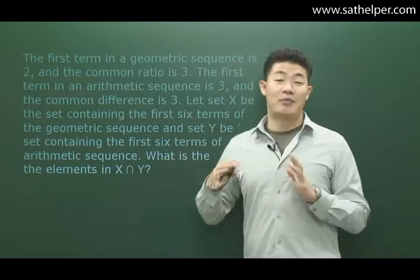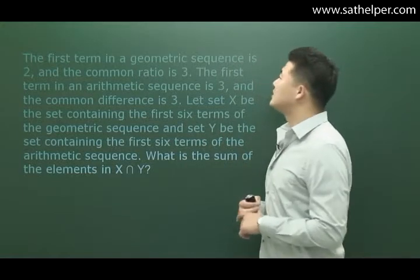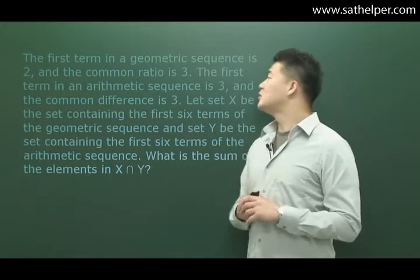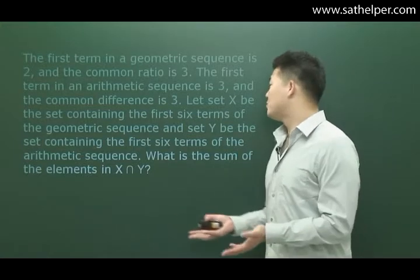So we're going to start with just reading a problem that's supposed to be a little bit challenging. It says, the first term in a geometric sequence is two and the common ratio is three. The first term in an arithmetic sequence is three, and the common difference is three.